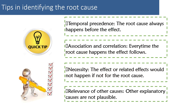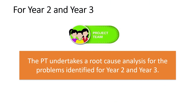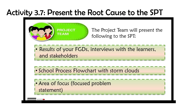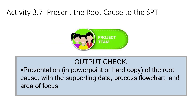The project team undertakes root cause analysis for the problems identified for year two and year three — take note, it is the project team, not the school planning team. The project team will present the following to the SPT: results of the FGDs, interviews with learners, school process flowchart with storm clouds, area of focus, and then agree upon which among them is the main focus of the priority improvement area.